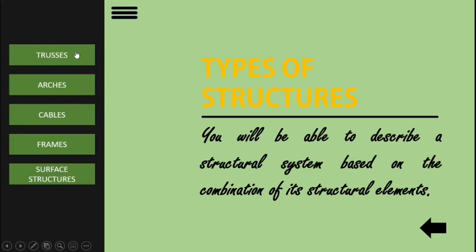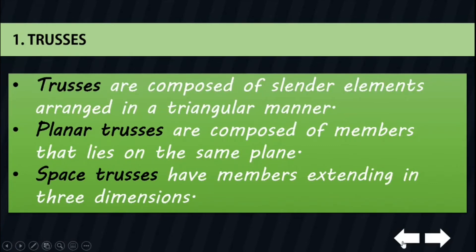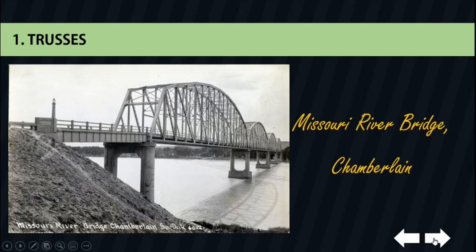Starting with trusses: when a large span of structure is required and its depth is not an important criterion for design, then a truss can be used. Trusses are composed of slender elements arranged in a triangular manner. Planar trusses are composed of members that lie on the same plane, whereas space trusses have members extending in three dimensions and are suitable for derricks and towers.